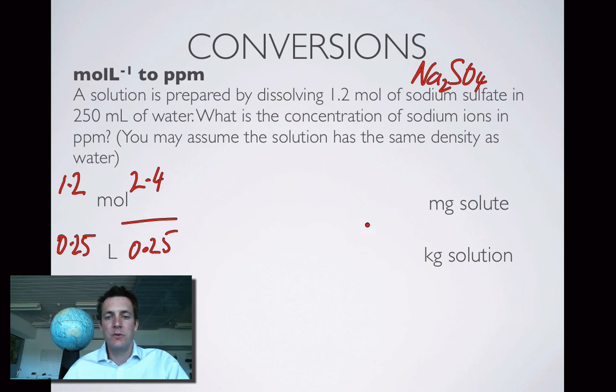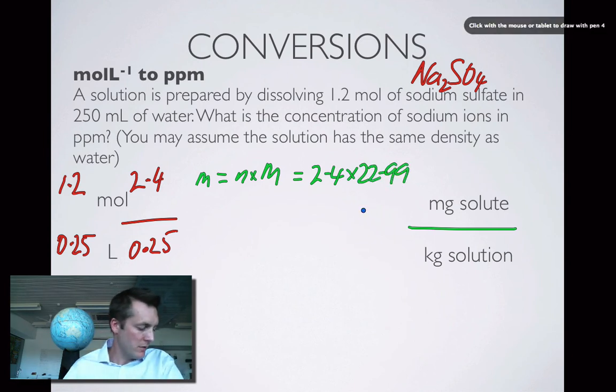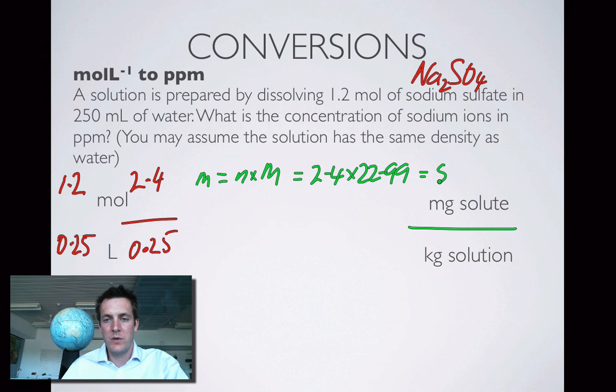Now can I turn 2.4 moles into milligrams? Well yes, because I need to just find the mass. This is a mass here. So I'm going to find the mass of solute and divide it by the mass of the solution. The mass of the solute, that is n times M—we're talking about sodium ions this time—so that's 2.4 times 22.99. So I find that I've got 55.176 grams. But I need this in milligrams, so I'm going to multiply this by a thousand. 55,176 milligrams.